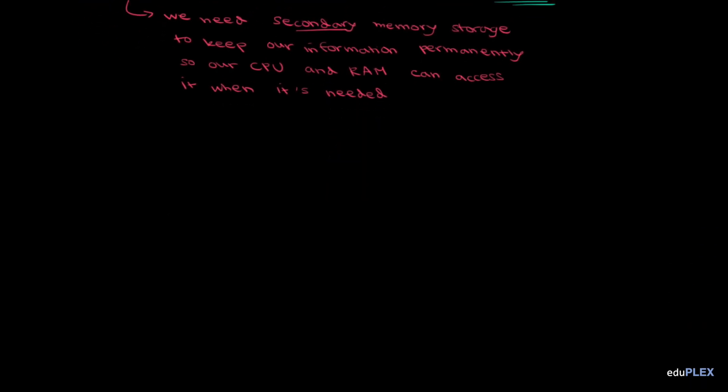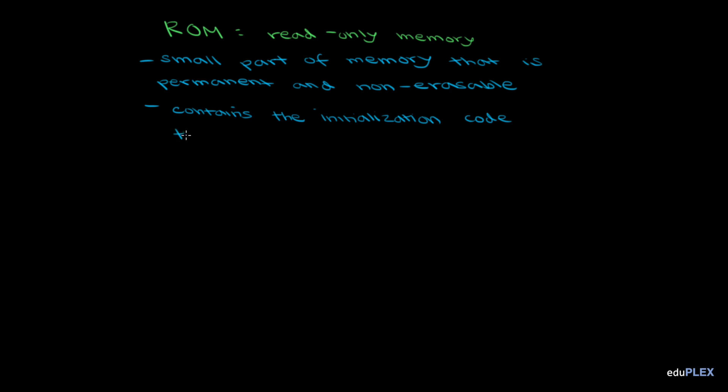One small detail I should point out is that there's also another type of computer memory. This small part of memory is permanent and non-erasable, and it's called ROM, or read-only memory. ROM contains the initialization code that boots up your operating system, so when you turn on your computer, ROM is basically giving RAM the first program it needs to work. It gives it the operating system. Once the operating system is ready to go, you can use your computer just like normal.